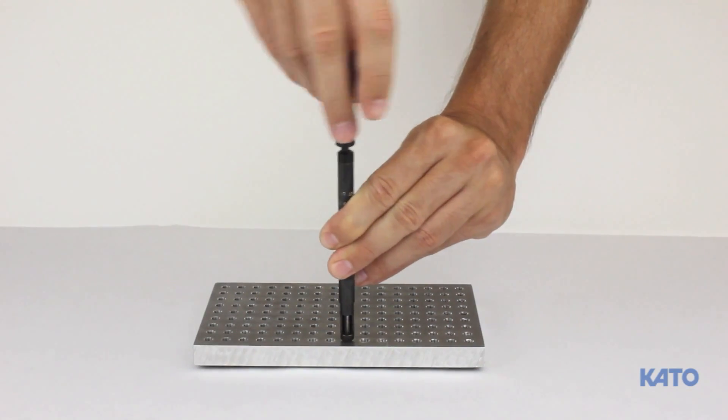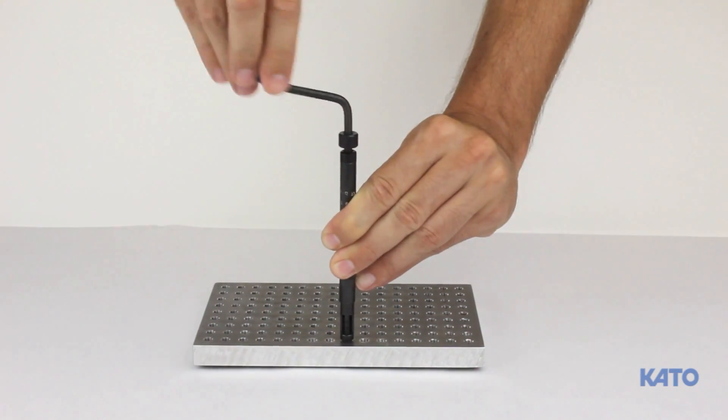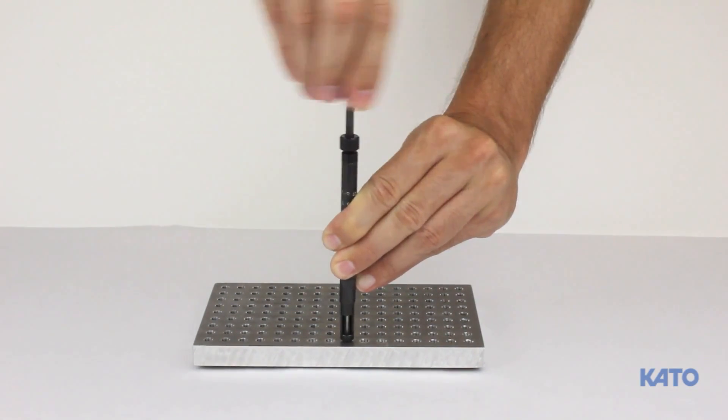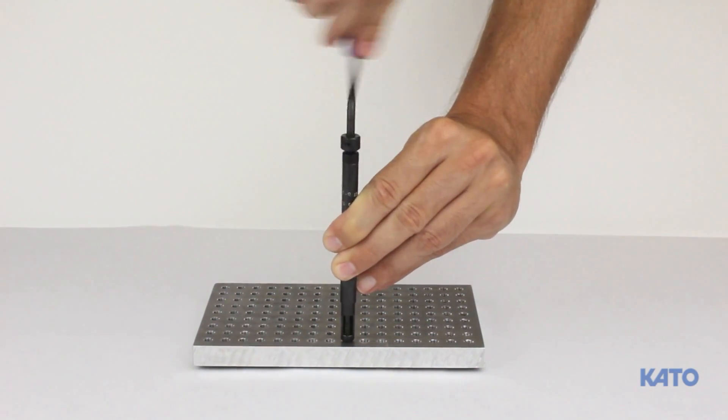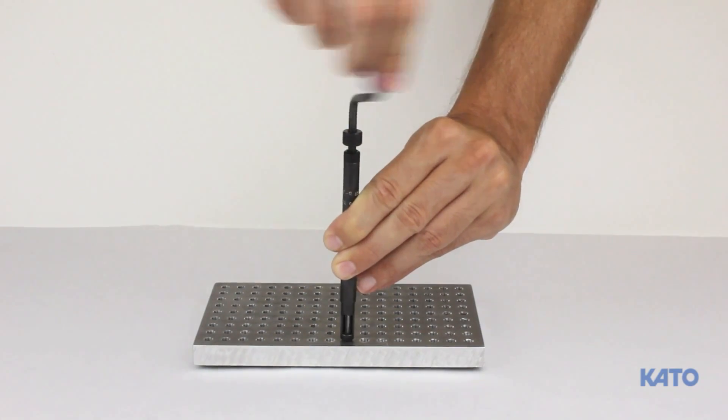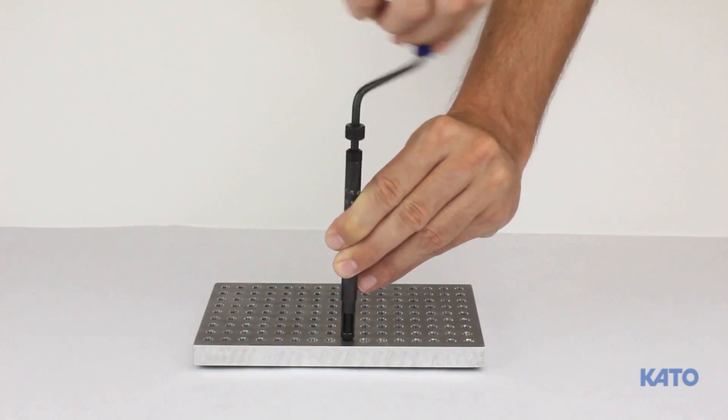Continue to turn the mandrel clockwise. Once the insert is fully installed, the collar will come into contact with the pre-winder sleeve. Rotate the mandrel counterclockwise until it completely exits the installed insert. Check the installation depth and readjust if necessary.